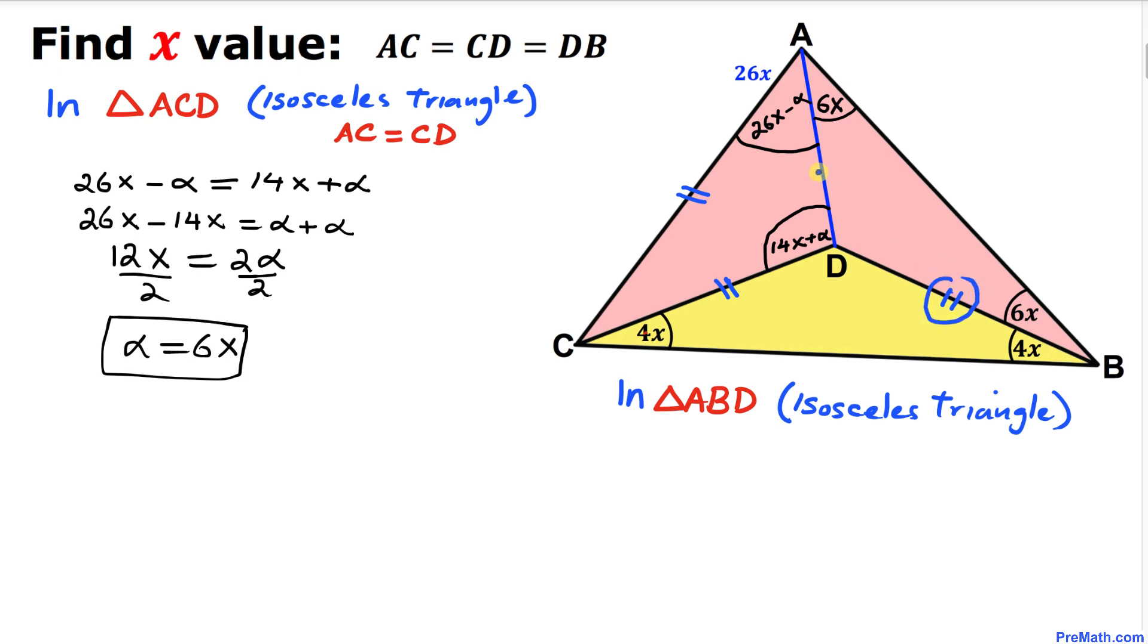So therefore, this side length will be equal to this length as well. So that means BD equals to AD.